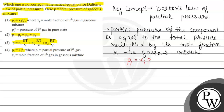This equation represents option 4, where PI is the partial pressure of the i-th gas, Xi is the mole fraction of the i-th gas, and P is the total pressure of the gaseous mixture. So option 4 is defined by Dalton's law of partial pressure, meaning option 4 is not our answer.